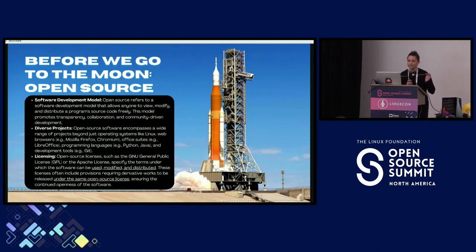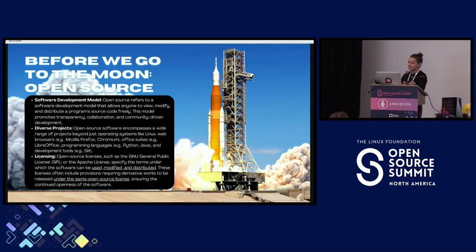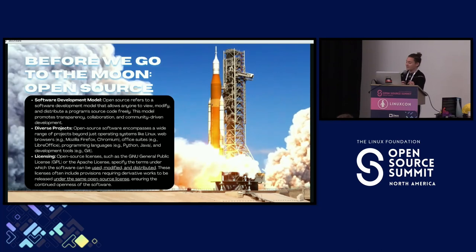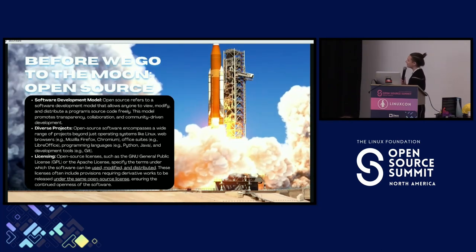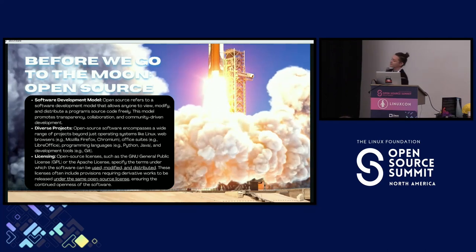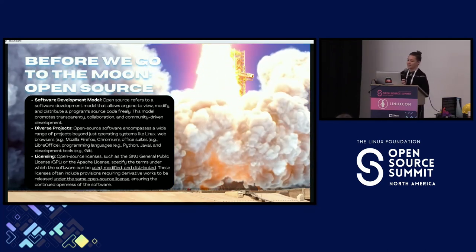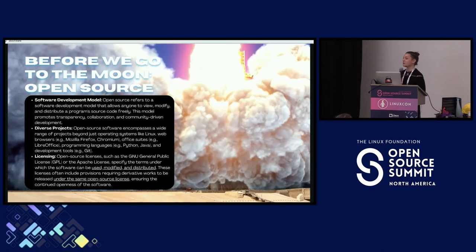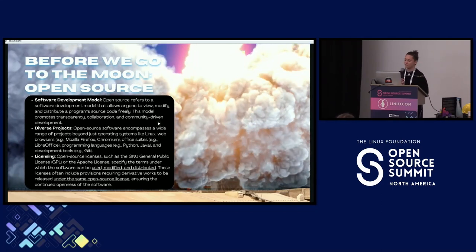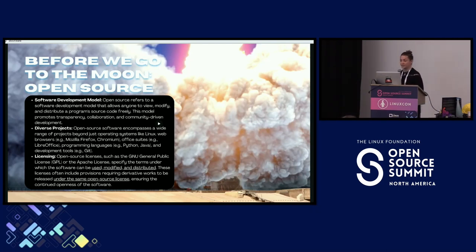Before we go to the moon, I want to talk a little bit about open source and the kind of open source that gets engaged in space. This is not just a software distribution model — we're trying to explore ways of communicating as much intellectual property as we can when we're solving hard problems. Great examples are programming languages like Python, Java, and tools like Git. We want to make sure that software with an open source license can be generally used, modified, and distributed.